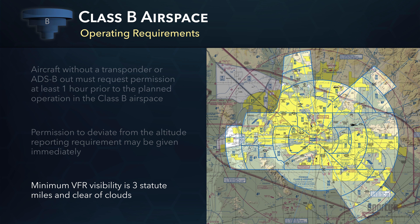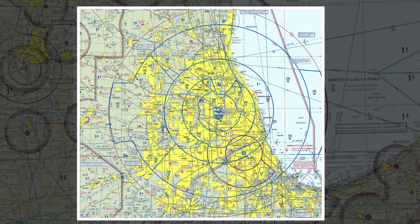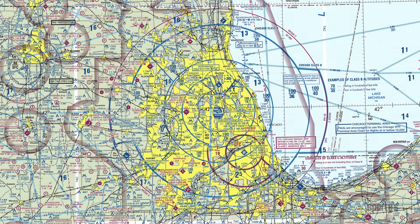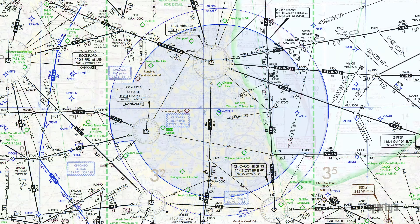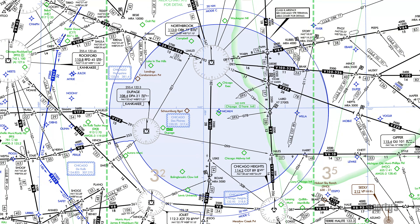The minimum VFR visibility in Class B is three statute miles, and you must stay clear of clouds. Class B is shown on terminal area, sectional, and low altitude and route charts.